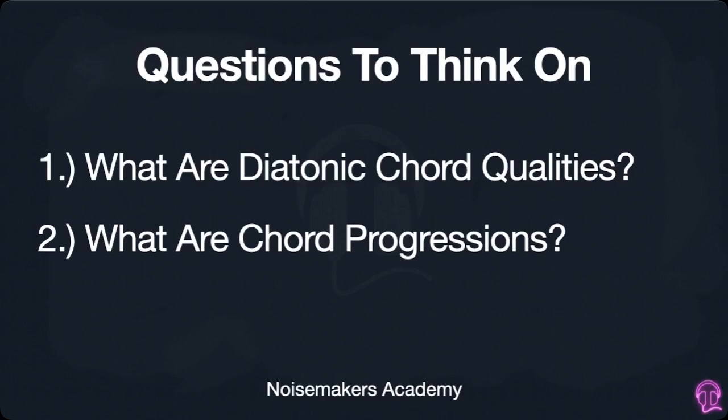Very quick lesson but very, very powerful. Please re-watch this a few times and reference how to find key signatures for sharps as well, and you'll have this in literally no time. That allows you to not only figure out the scale and the key signatures, but every major and minor triad that go along with that. And that brings us to questions to think on: what are diatonic chord qualities and what are chord progressions? Really looking forward to the next lesson. Good job on this one.